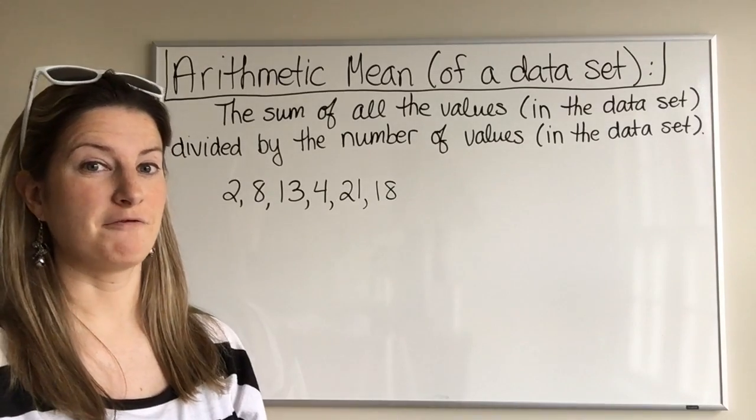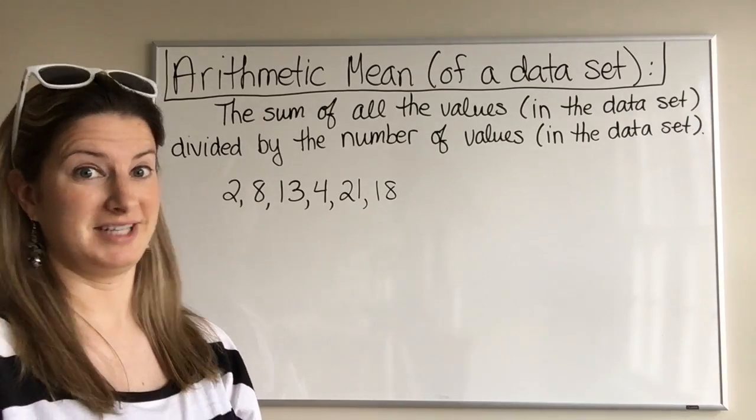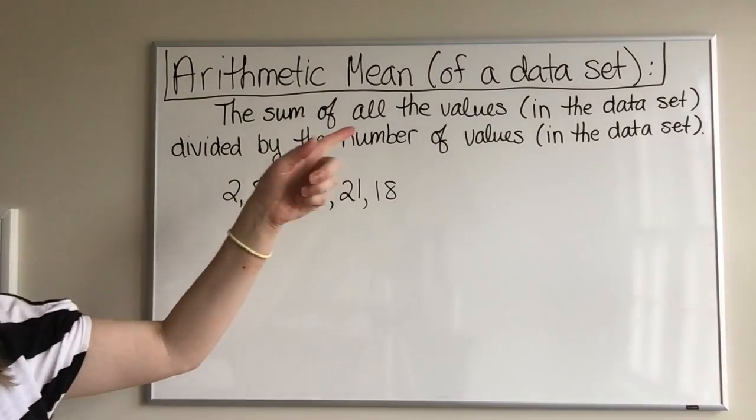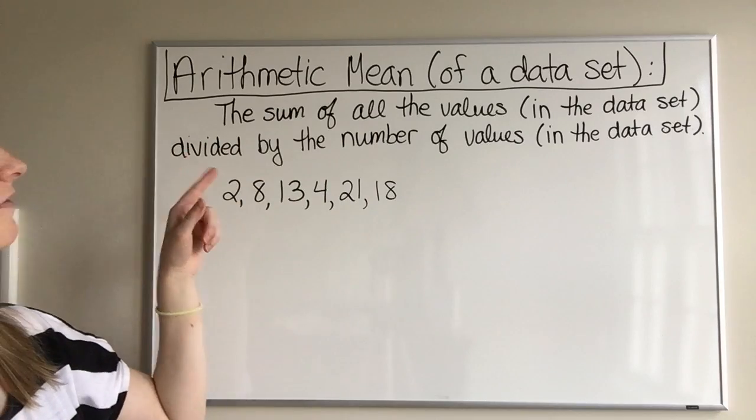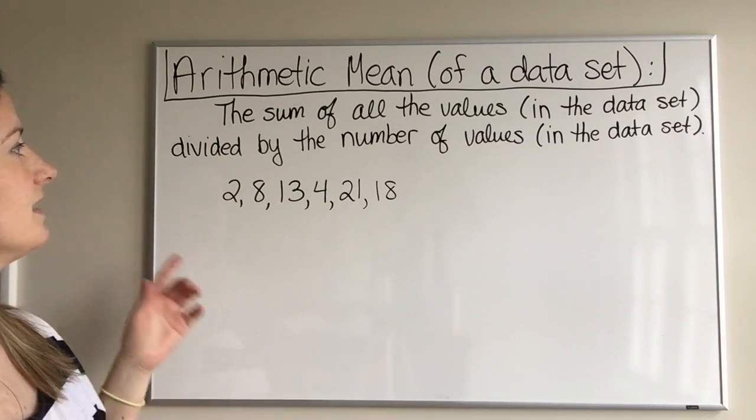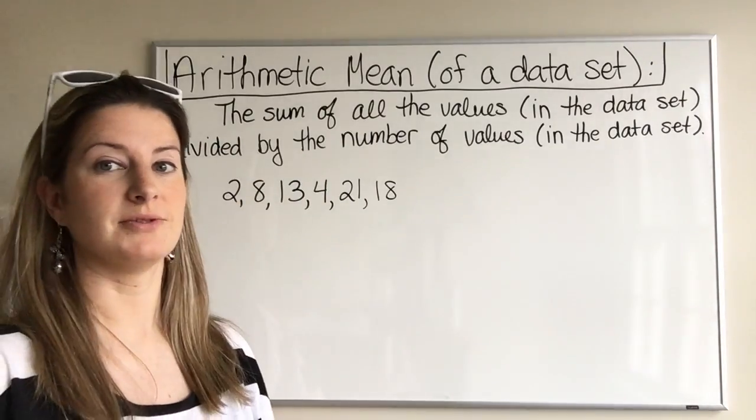Here is a definition for arithmetic mean of a data set. The arithmetic mean of a data set is the sum of all the values in the data set divided by the number of values in the data set.